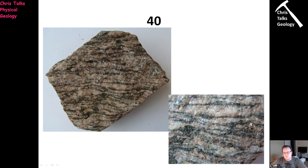Whatever was making up these darker layers was stable at higher temperatures but it's not stable anymore, so it's turning into something new with a rather distinct greenish colour. The most likely mineral is chlorite — C-H-L-O-R-I-T-E — which will typically replace minerals like biotite, pyroxene, and amphibole such as hornblende. It could also be actinolite — A-C-T-I-N-O-L-I-T-E — a type of amphibole that will commonly replace pyroxene and hornblende. So these layers of slight greenish tint could be chlorite or actinolite, and chances are it's chlorite, but we can't be 100% certain.